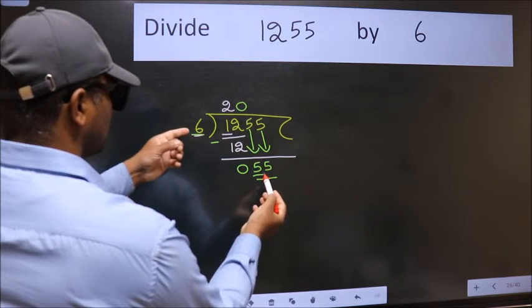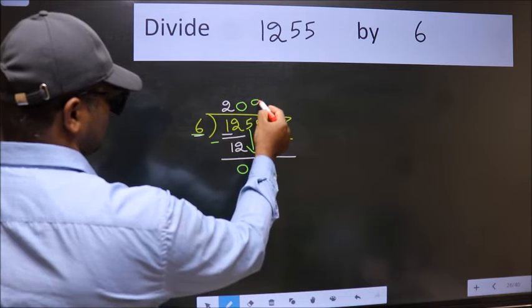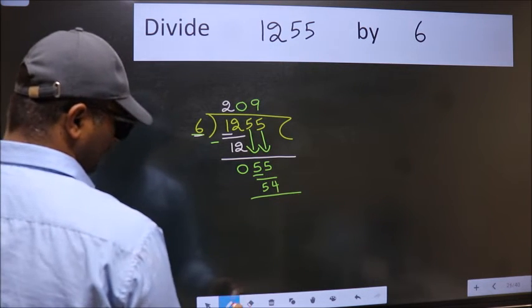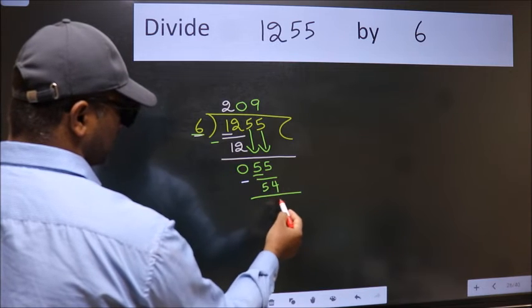A number close to 55 in 6 table is 6 nines, 54. Now we subtract. We get 1.